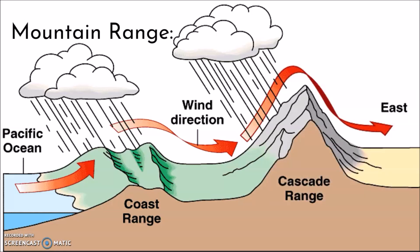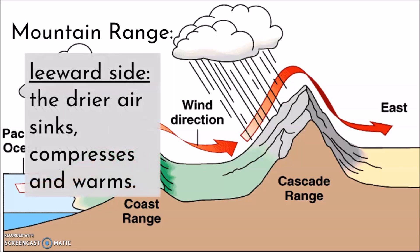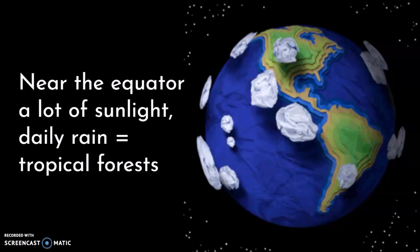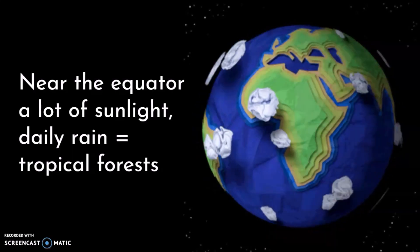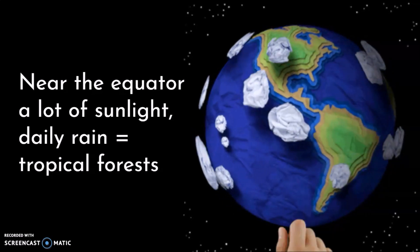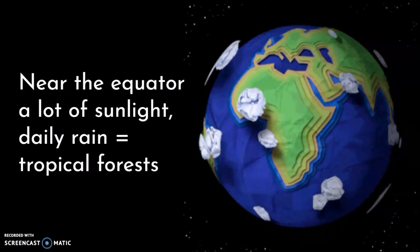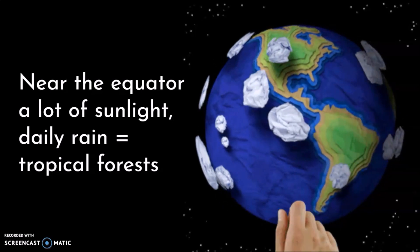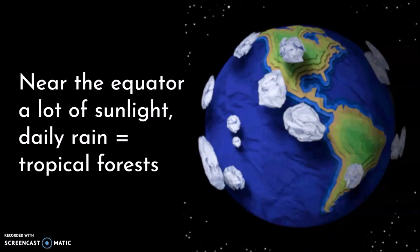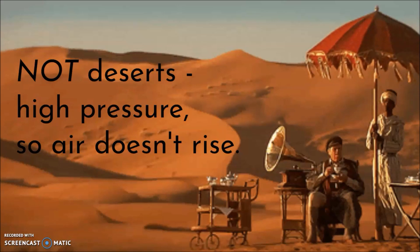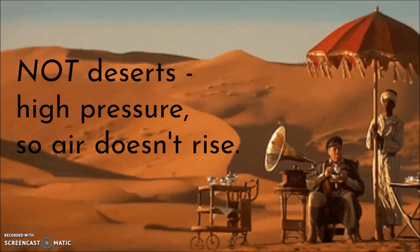By the time the wind gets to the other side — the leeward side of the mountain — the air is already going to be dry and is starting to sink, compress, and warm. So on the right side, you might have less rain than on the left. Areas near the equator will also have a lot of rainfall because they are next to water and they get a lot of sunlight. Because of this, they might have daily rains in some places, which create tropical forests. Deserts are not going to get rain because they have high air pressure, which doesn't allow air to rise. We'll talk about air pressure in the next lesson.